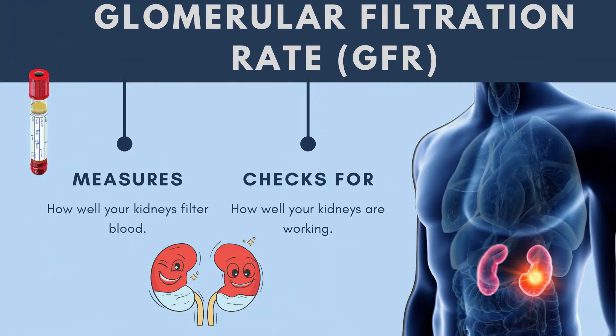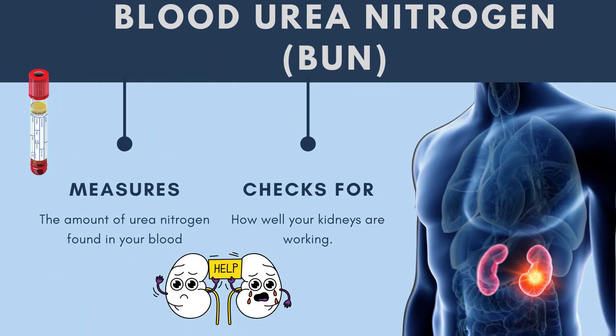Another set of tests covers kidney function: the glomerular filtration rate (GFR) simply measures how well the kidney is filtering. A related test called Cystatin C also measures kidney function, as does blood urea nitrogen (BUN), which measures how much nitrogen is making it into your urine — giving an idea of whether your kidneys are handling protein efficiently.